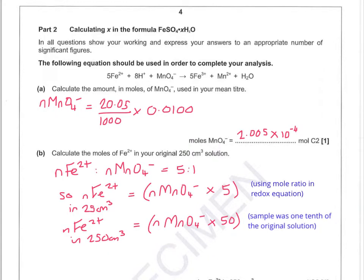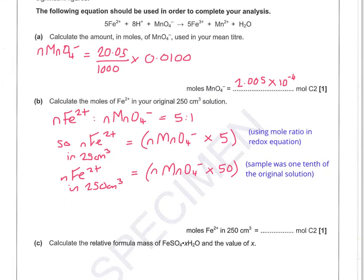So we need to do two things. First of all, use the mole ratio in the redox equation, which is 1 to 5. And secondly, remember that the sample that we've just titrated was one-tenth of the original solution. So what that means is you need to take the moles of MnO₄⁻ and actually multiply them by 50 to give you 1.0025 times 10 to the minus 2.